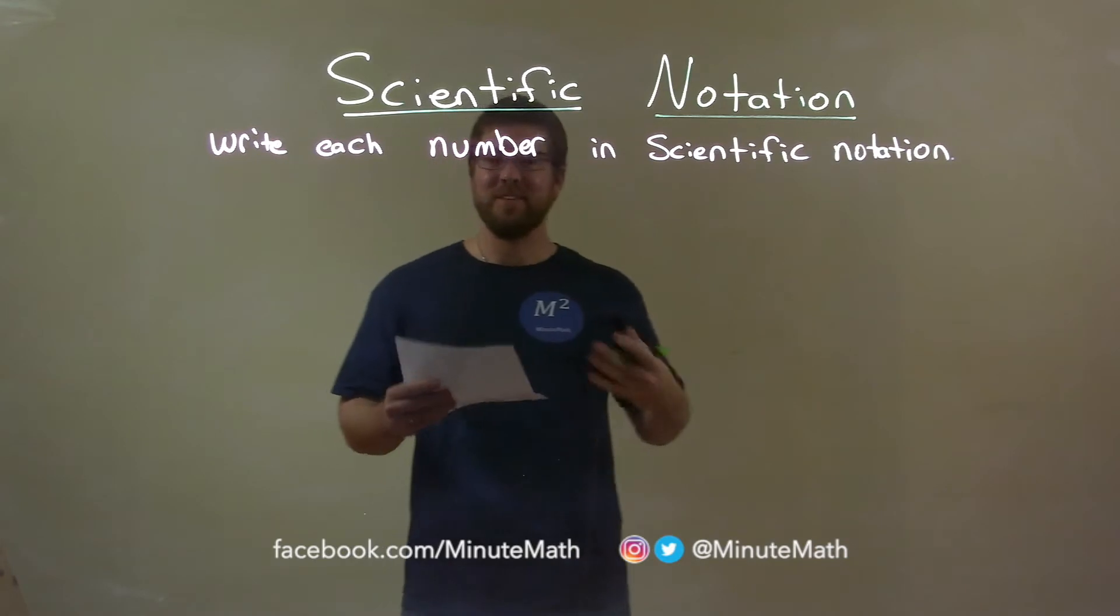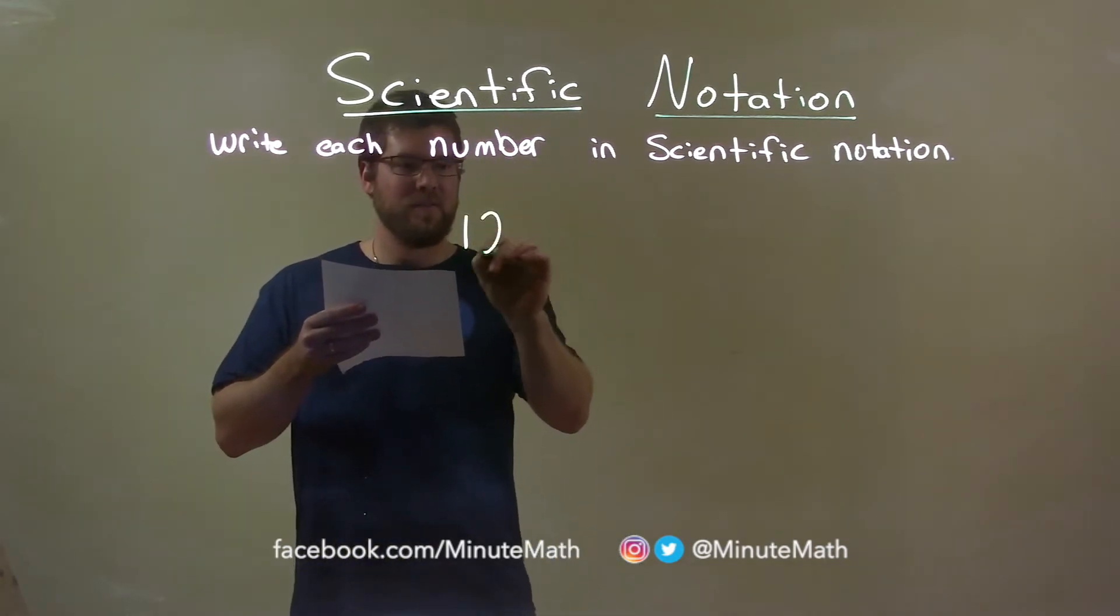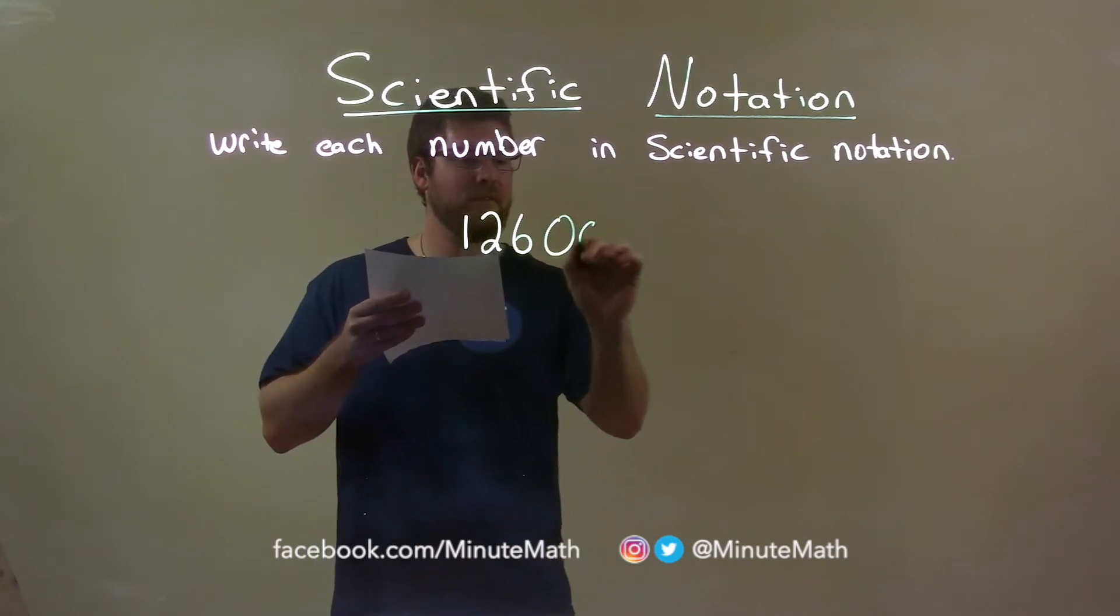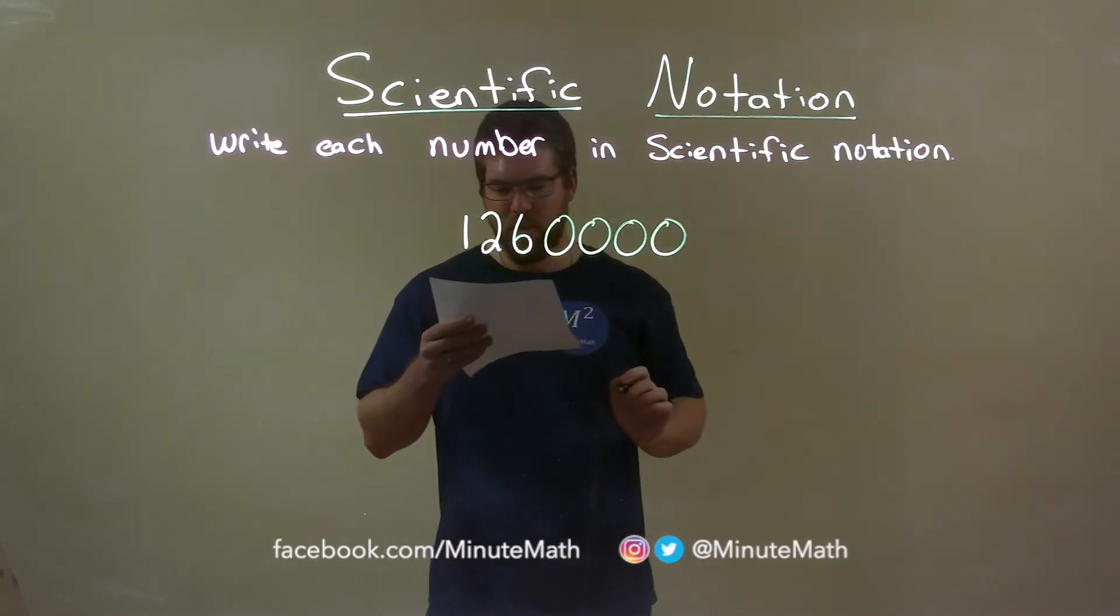So if I was given this number: one, two, six, and we got four zeros. One, two, three, four. Okay?